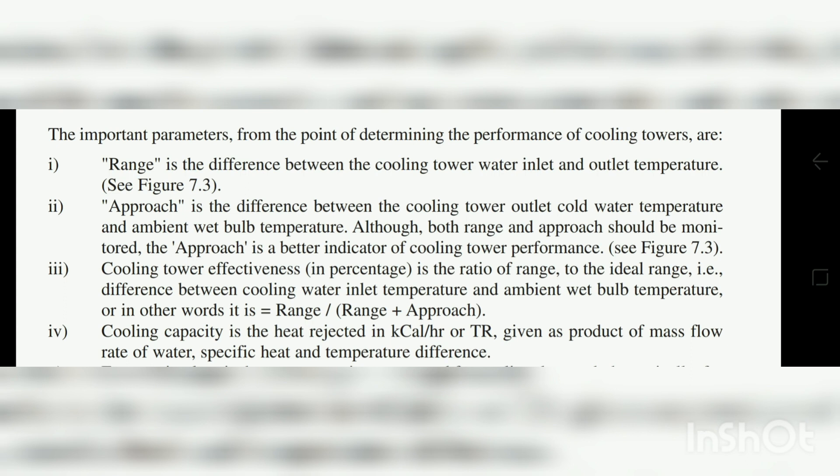Cooling tower effectiveness is defined as: Range divided by (Range + Approach). Range is what we are actually achieving, and Range + Approach is what we ideally want to achieve. In terms of heat transfer, it is the ratio of actual heat transfer to ideal heat transfer. The cooling capacity is the heat rejected in kilocalories per hour, calculated as mass flow rate × specific heat × temperature difference, i.e., mCpΔT.